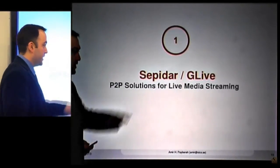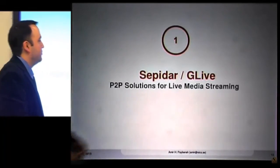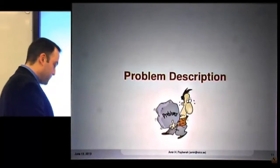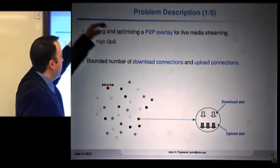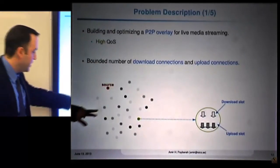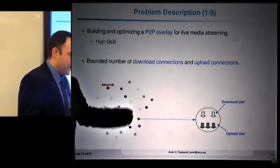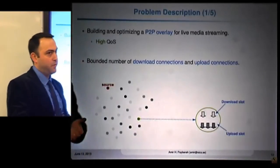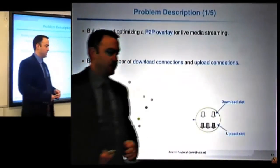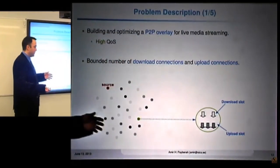We want to build a peer-to-peer overlay for live streaming with high quality of service. Each node can receive data from a bounded number of nodes and provide data to a bounded number of nodes — represented by download slots and upload slots. For example, one node can receive data from two nodes and provide data to three others. We split the stream into sub-streams; for example, a blue sub-stream and a red sub-stream.